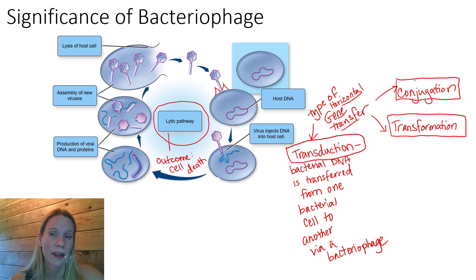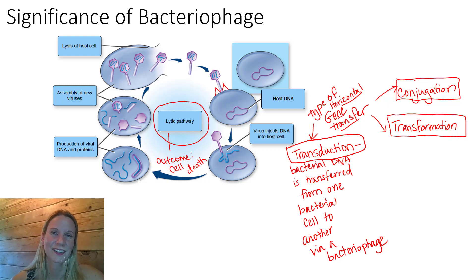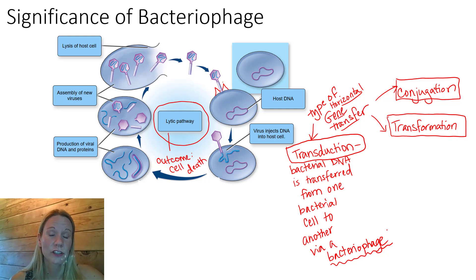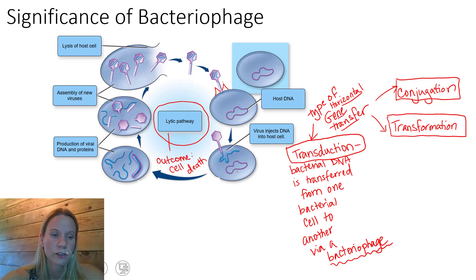So at that point in the semester I held off telling you about transduction because most of you were just trying to wrap your heads around conjugation and transformation. Now those are memories of the past that you've conquered. Transduction is another mechanism of transferring genes between bacterial cells, but it's via an intermediate structure called a bacteriophage. Now this is actually fairly rare, but it does happen.